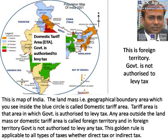This is the map of India. The landmass, that is the geographical boundary area which you see inside the blue circle, is called domestic tariff area. Tariff area is that area in which the government is authorized to levy tax. Any area outside the landmass or domestic tariff area is called foreign territory, and in foreign territory, the government is not authorized to levy any tax. This golden rule is applicable to all types of taxes, whether direct tax or indirect tax.